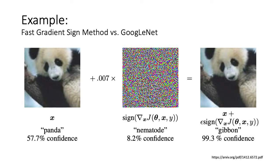Here we have an example of an adversary fooling a classifier model. In this case, the fast gradient sign method is used to fool GoogleNet into classifying this input as a gibbon, even though it is clearly a panda.